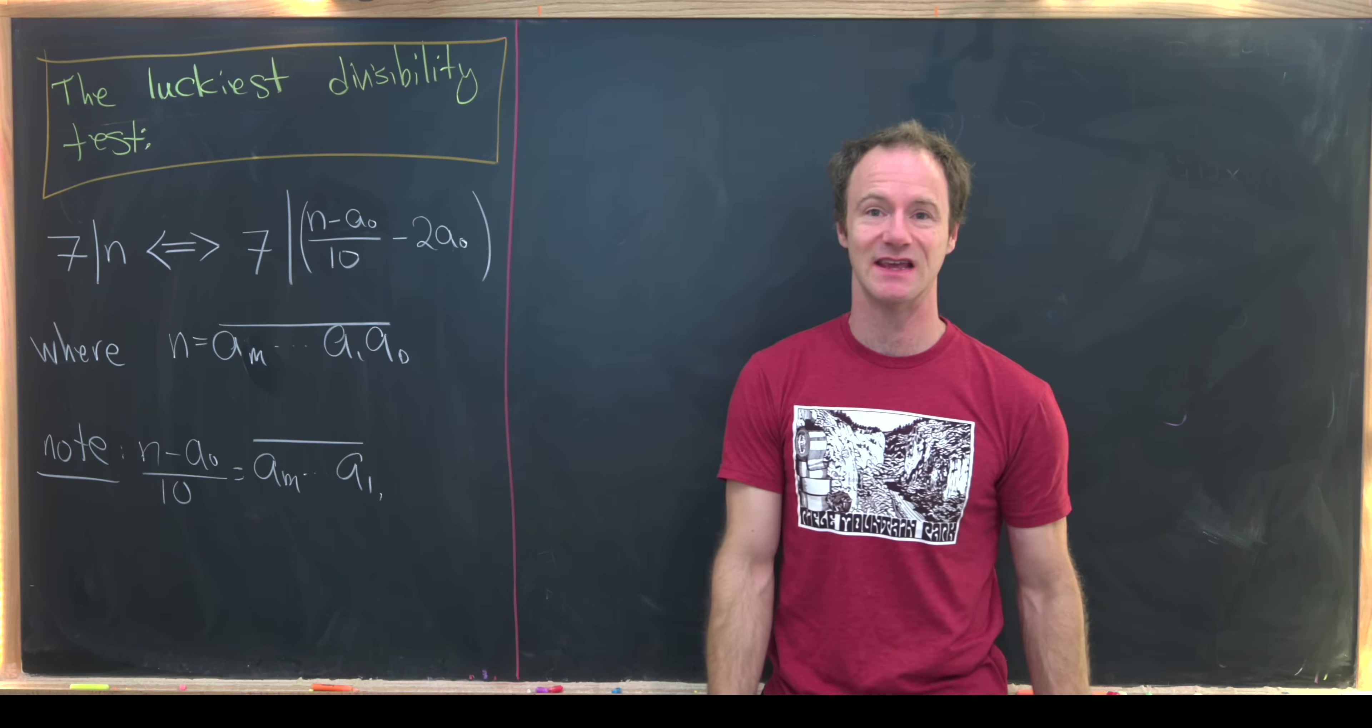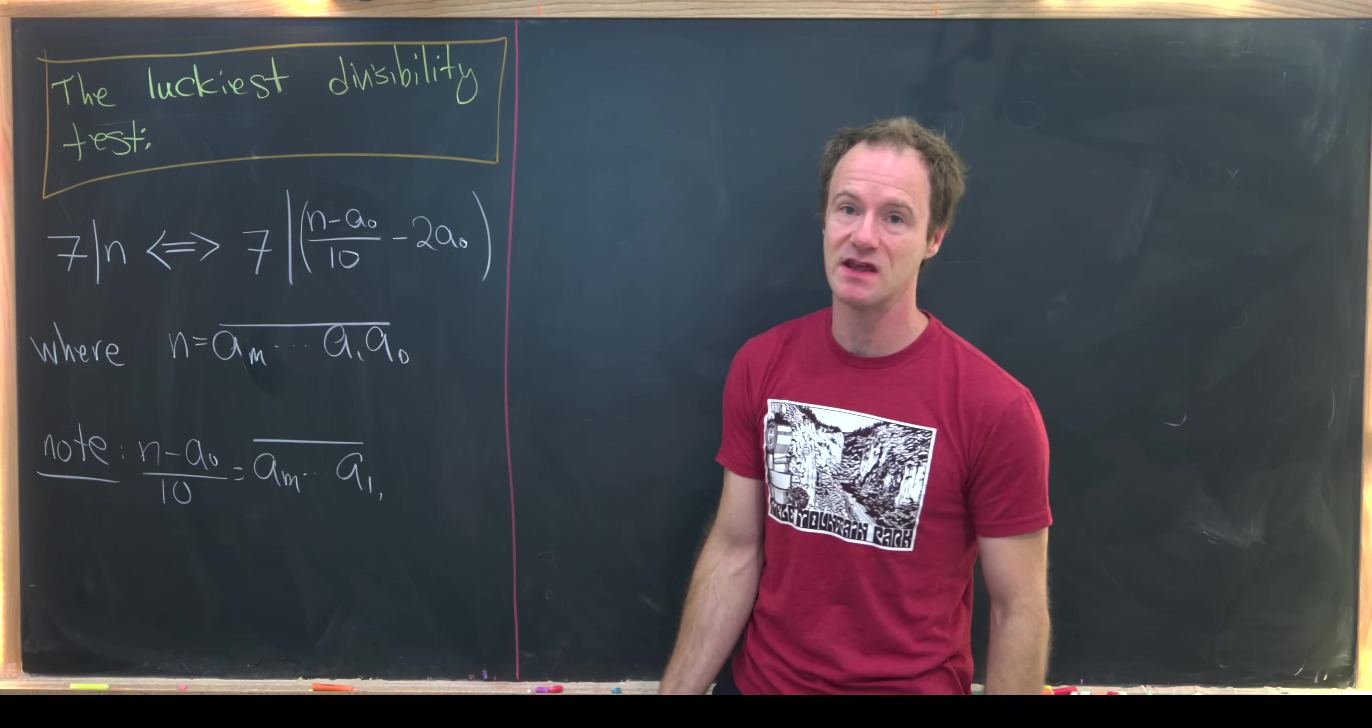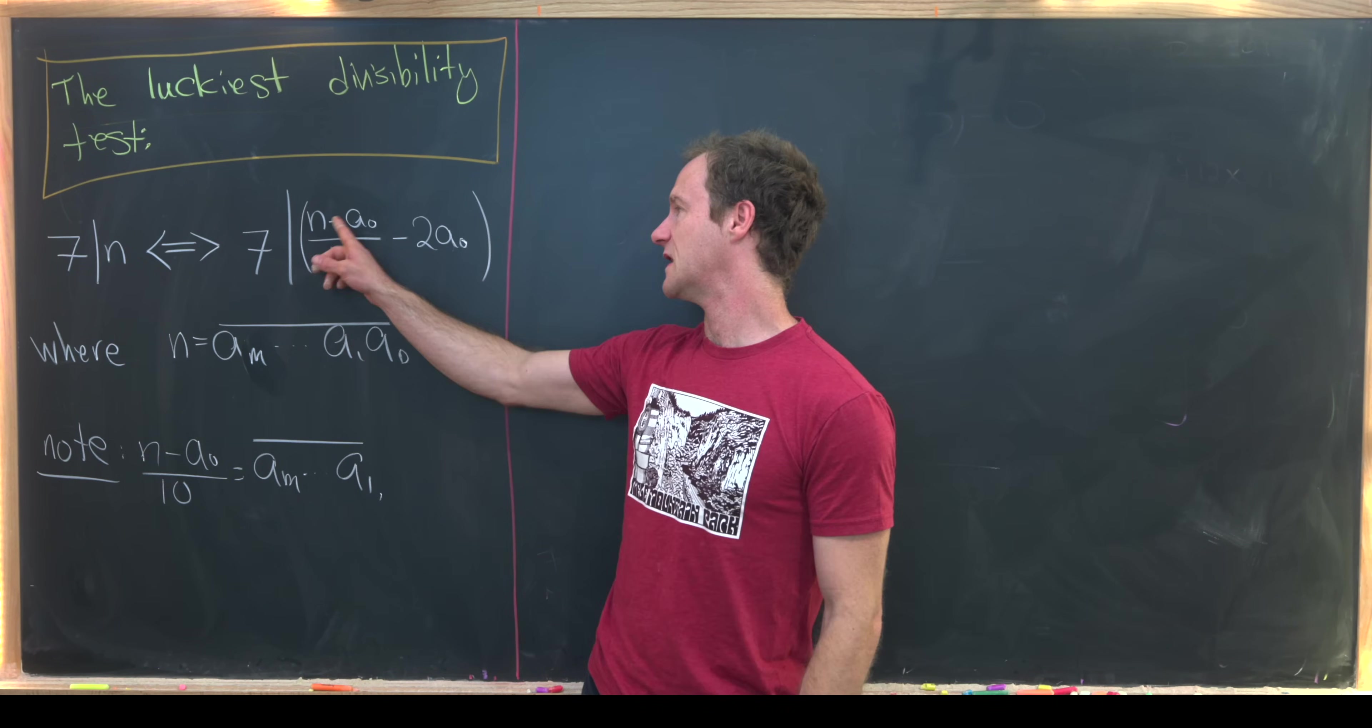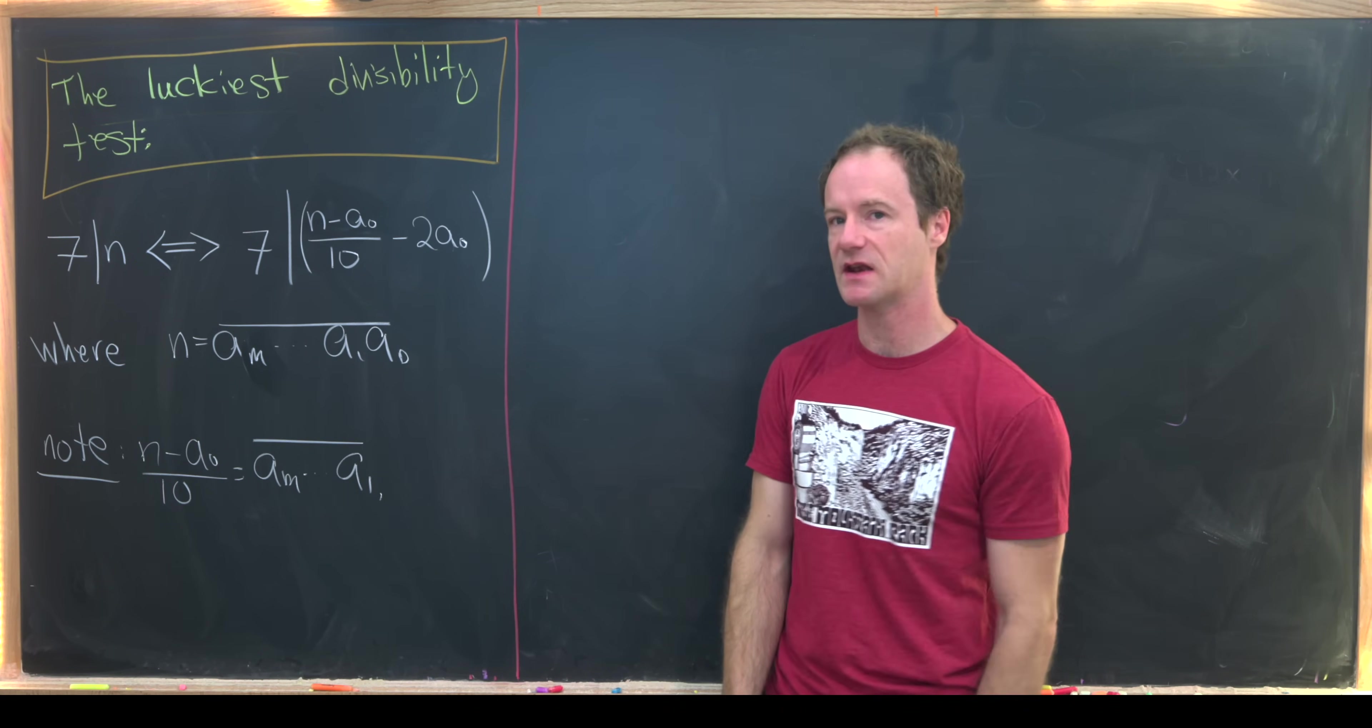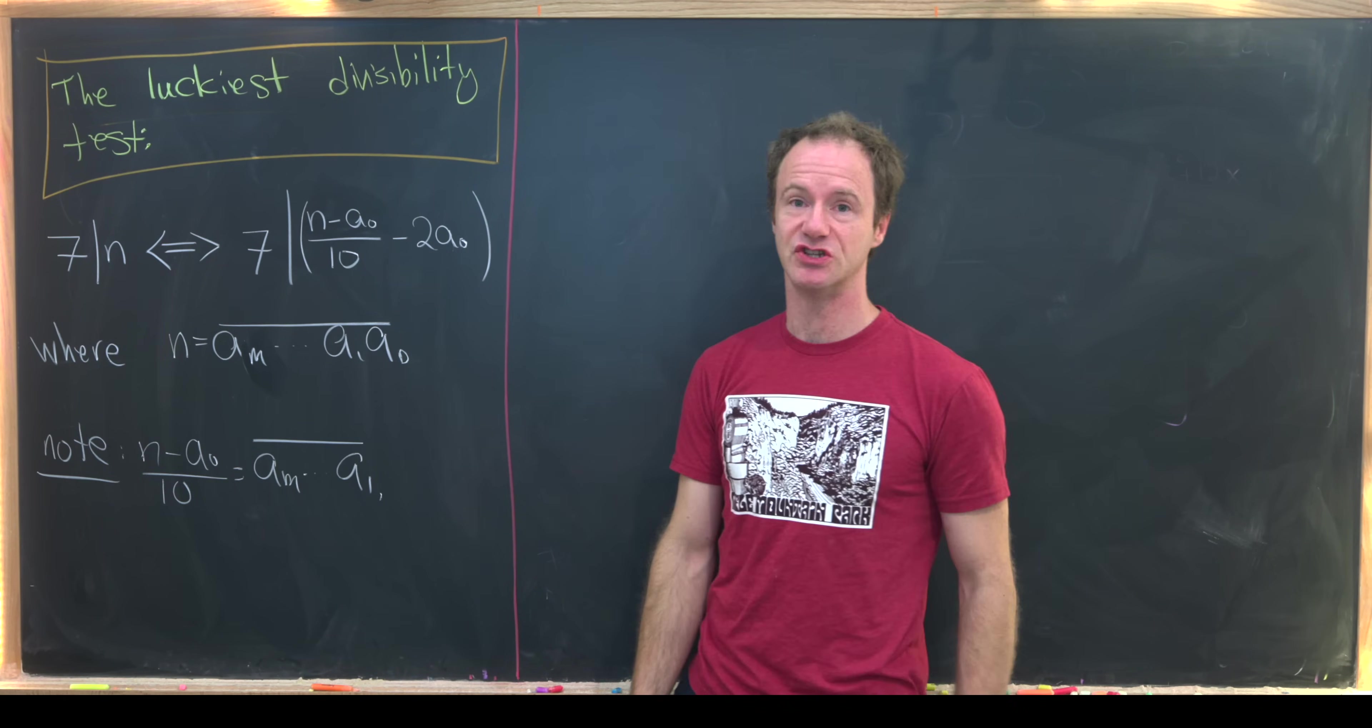So the rule goes like this. Seven divides n, in other words n is a multiple of seven, if and only if seven divides into this new kind of crazy looking object, which is n minus a naught over 10 minus two times a naught. You might say, well, what's a naught?